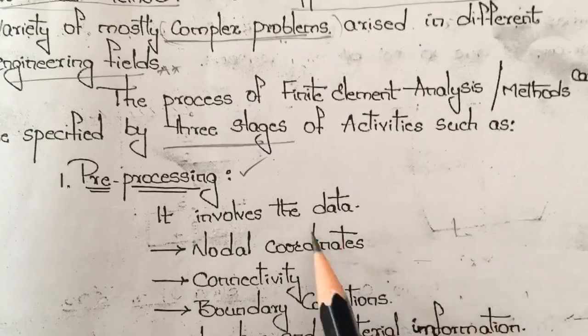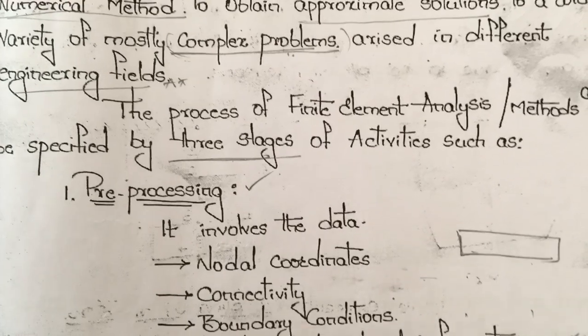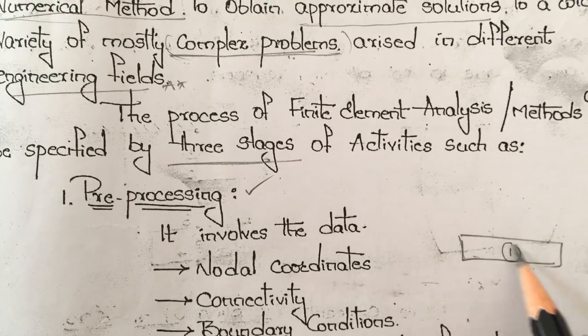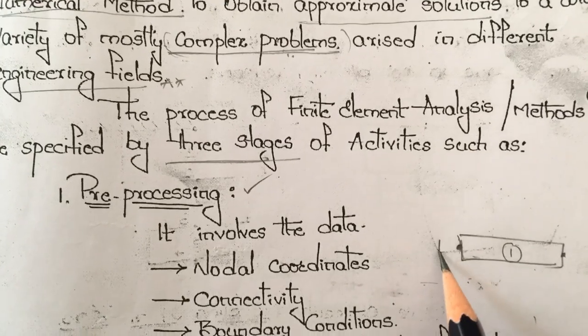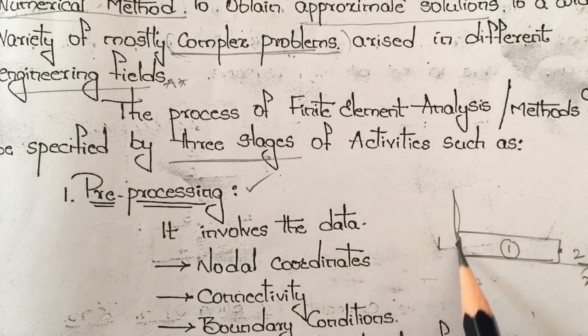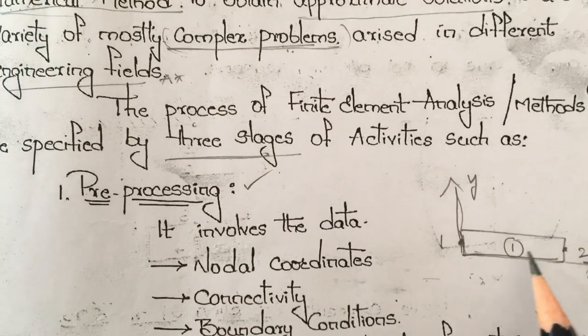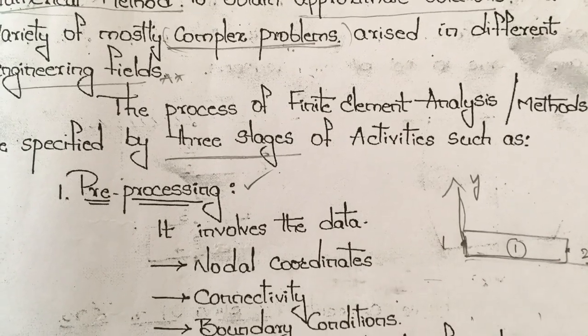Pre-processing involves nodal coordinates. For example, if we have a bar element, we call it Element 1. It has two nodes with x-coordinate and y-coordinate. Each element has two nodes and two coordinates, x-coordinate as well as y-coordinate.